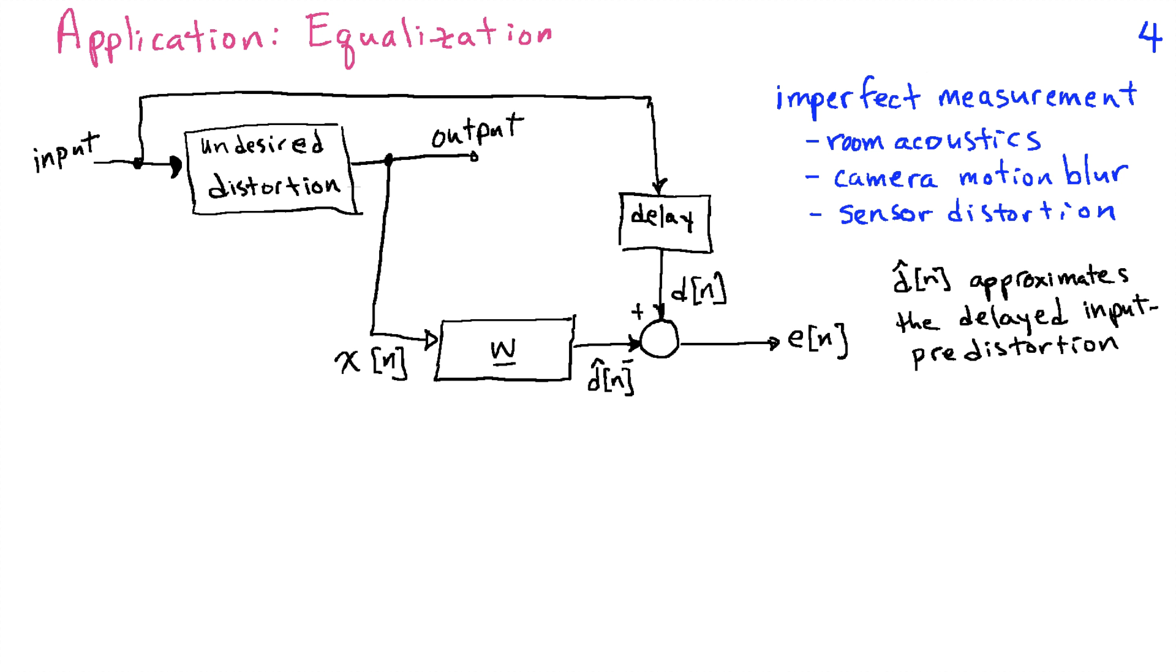Now the way we would set this problem up is to take the output signal and have that be the input to our filter W, and then try to find filter coefficients so that the output of this filter gives us back the input, the original system. We have to incorporate a delay because this system certainly has some delay through it. This filter also is going to have some delay, and so we don't want to try to undo that delay with our filter, but rather predict in the middle.